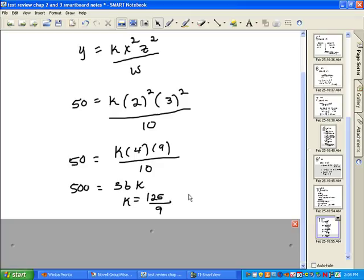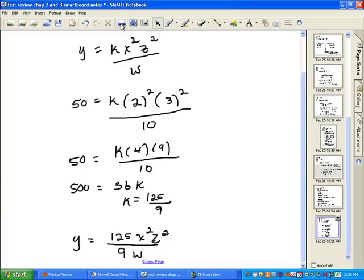What we're going to do is take the k and substitute it back into the original problem. So if I look at what I have now, this is k. Here's the rest of the problem. So my new equation is y equals 125x squared z squared divided by 9w.